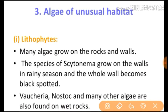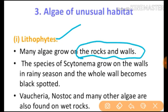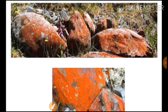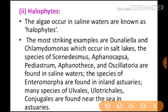Now we move to algae of unusual habitat. The first type is lithophytes — many algae grow on rocks and walls. Species of Scytonema grow on walls in the rainy season and the whole wall becomes black-spotted. Vaucheria, Nostoc, and many other algae are also found on wet rocks. They are easy to recognize by their black spots. We call them lithophytes.